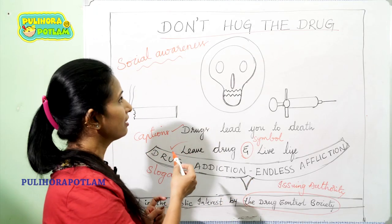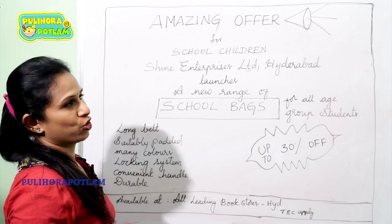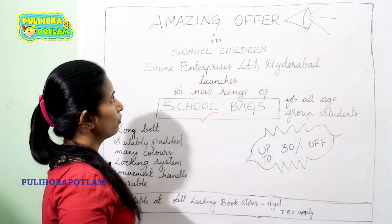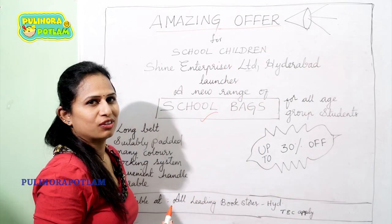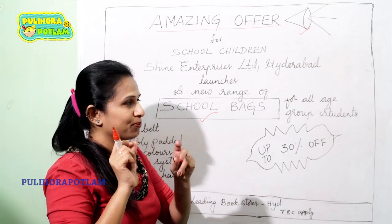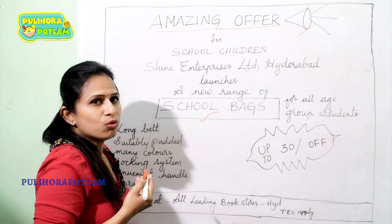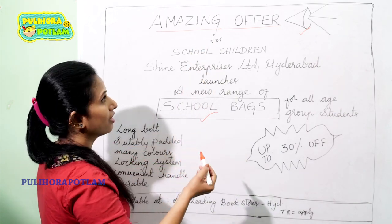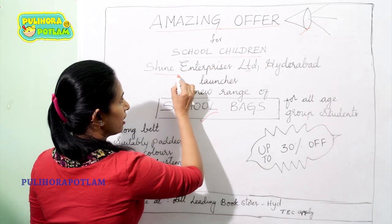Let us move on to the next topic — a poster on sales promotion. Here is the next poster on sales promotion. We are promoting school bags. For that, I have taken the heading in the form of 'Amazing Offer,' and I have taken a symbol where it announces. The font size is the biggest, and the item I want to highlight I kept in a bigger font. After that, to whom we are giving that amazing offer — we are giving it to school children. We have also mentioned the issuing authority here.